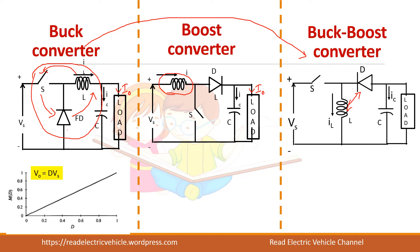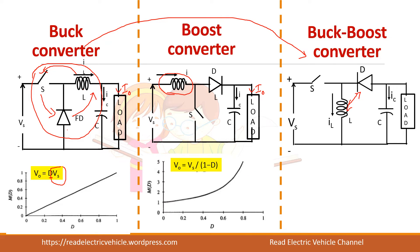Now let us see the voltage ratio of the converters. For the buck converter, V0 is equal to D times Vs. The duty cycle D varies between 0 to 1, so if you vary the duty cycle the output will vary linearly. For the boost converter, V0 is equal to Vs divided by (1 minus D). At low duty cycle values a boost converter will always give good performance, but performance degrades as the duty cycle increases.